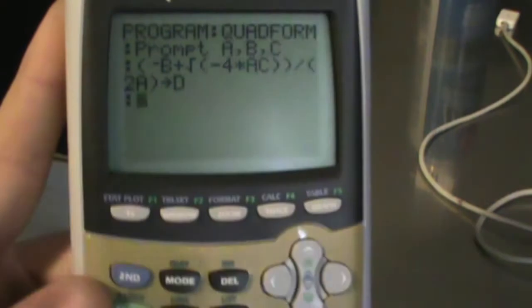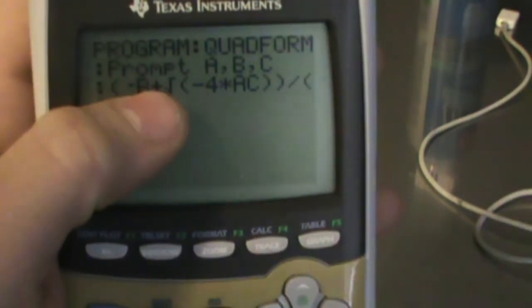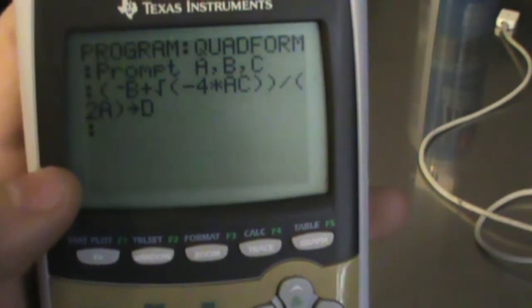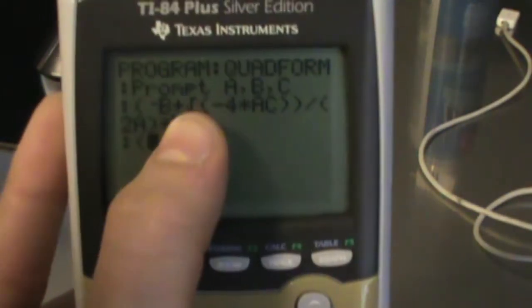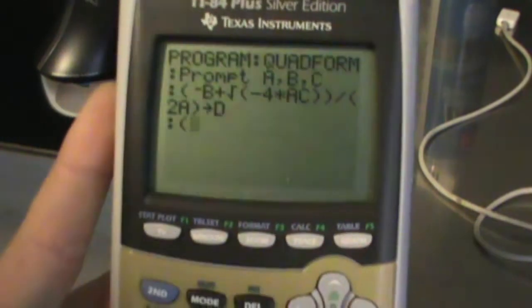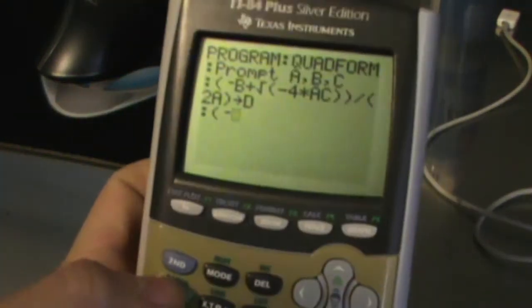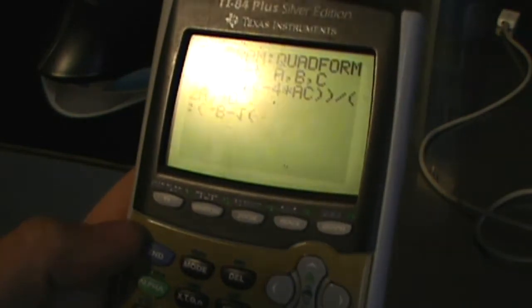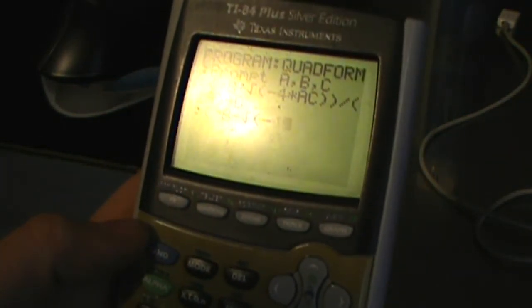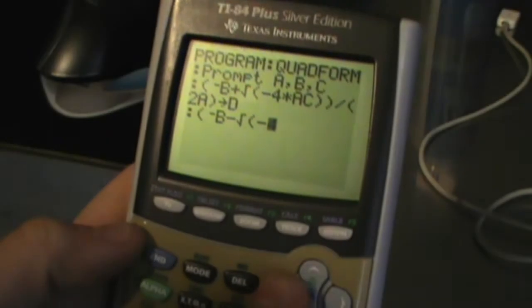Alright, next thing—since we have the plus, next thing is to create the minus. So we're going to type the entire thing and just change this symbol here to a minus. So, minus B, minus square root of negative 4. And I just realized,